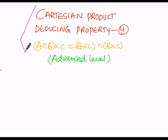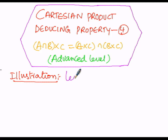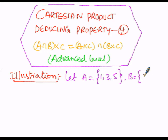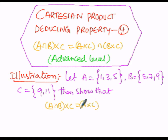To deduce this condition, we are going to assume 3 sets: A, B, and C. We will illustrate by means of one example. Let set A equal to {1, 3, 5}, set B equal to {5, 7, 9}, and set C equal to {9, 11}. Then show that A intersection B cross C equals A cross C intersection B cross C.